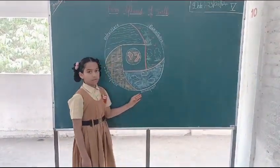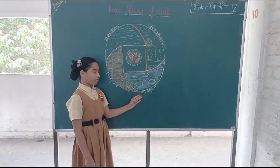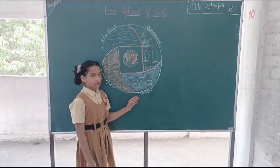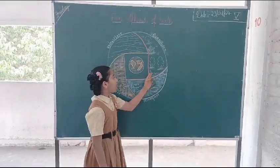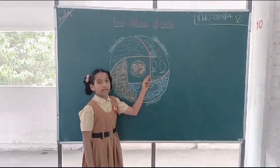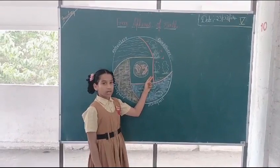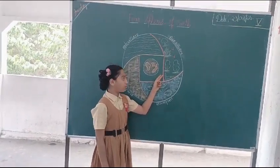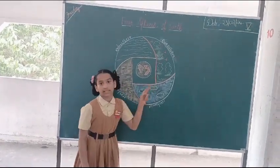Atmosphere consists of air and other gases. Biosphere includes all the three spheres where life exists.